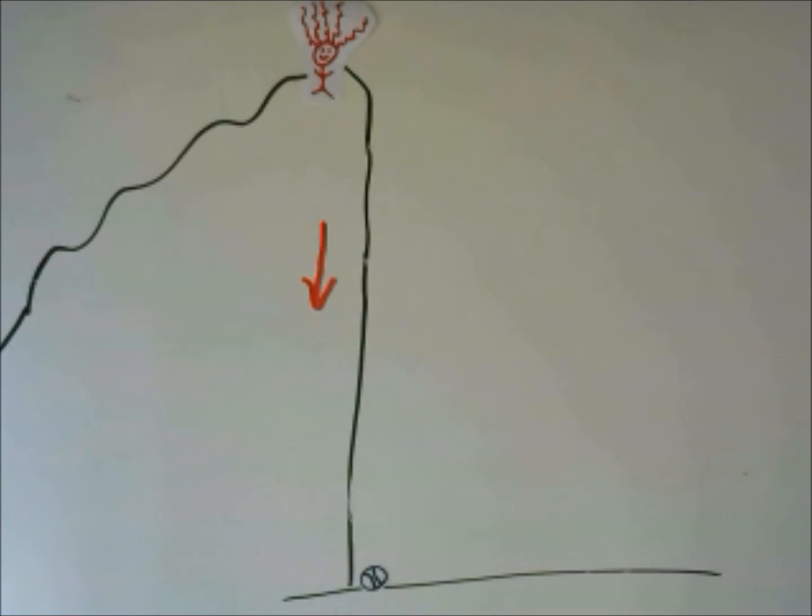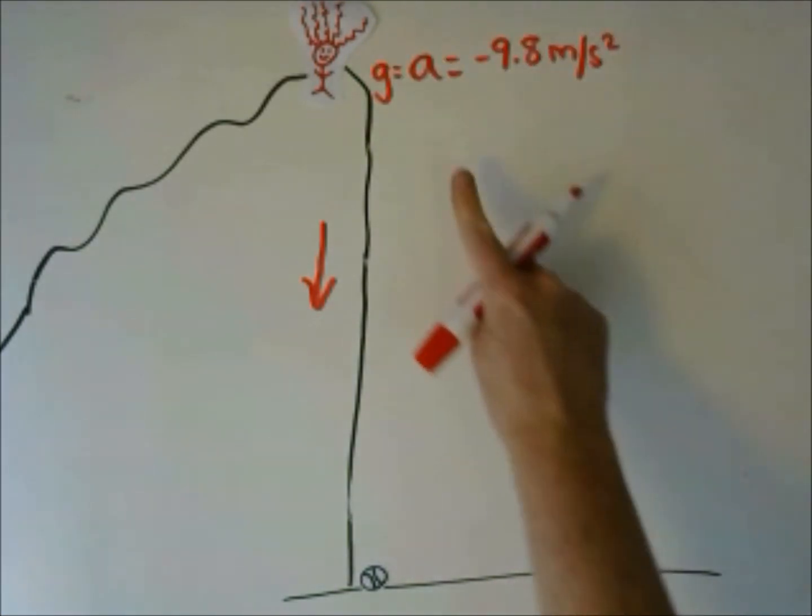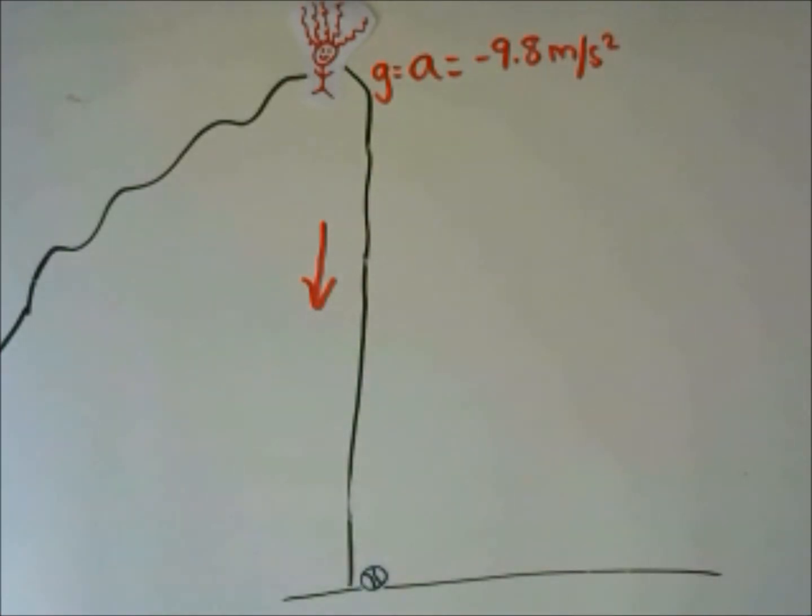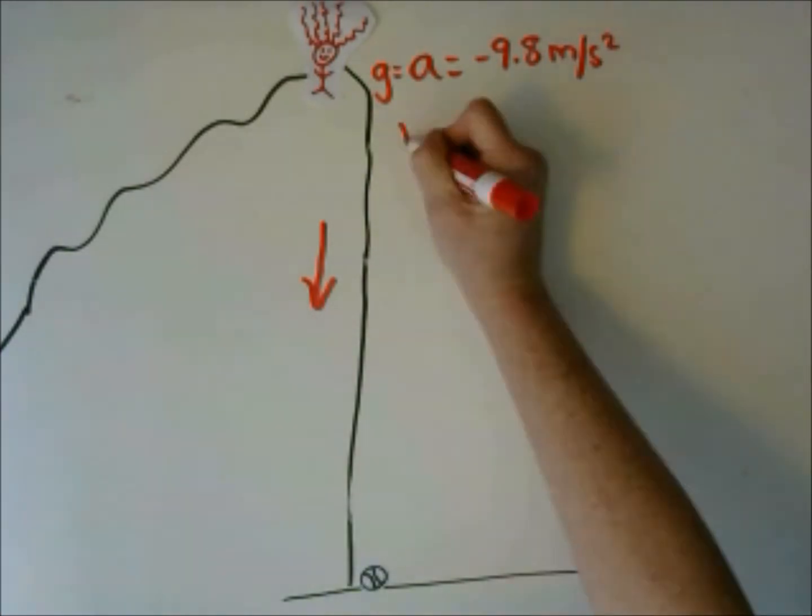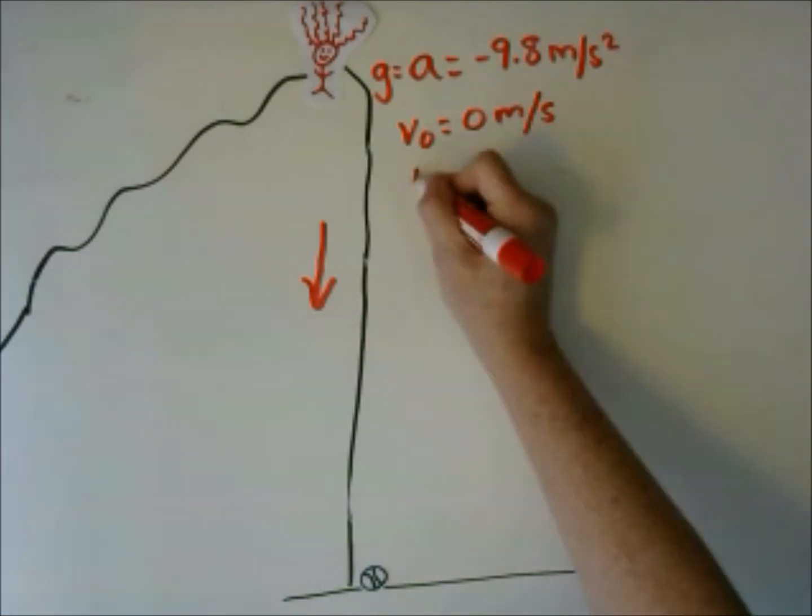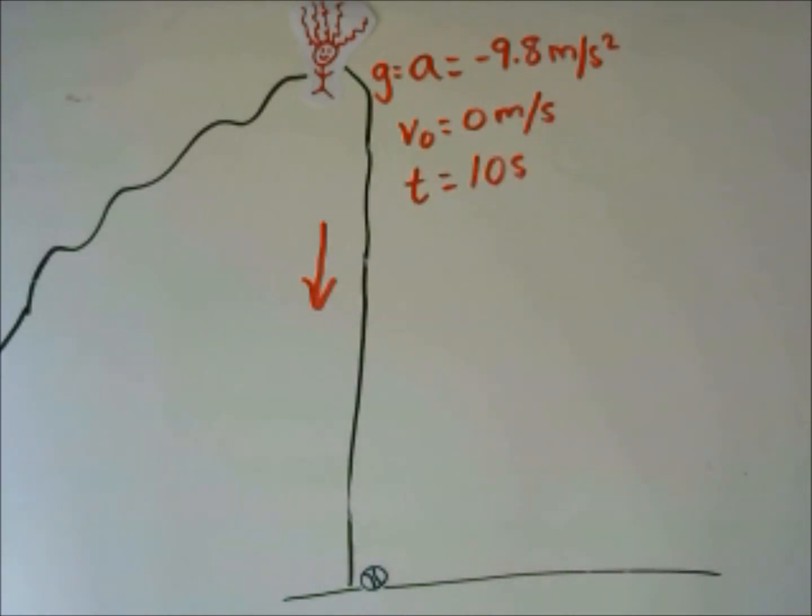What do we know from the beginning? We know that our acceleration is from the acceleration of gravity. It is negative 9.8 meters per second squared. We know that when she dropped the ball, she dropped it from rest, so its initial velocity was 0 meters per second. We know that it took 10 seconds to fall.